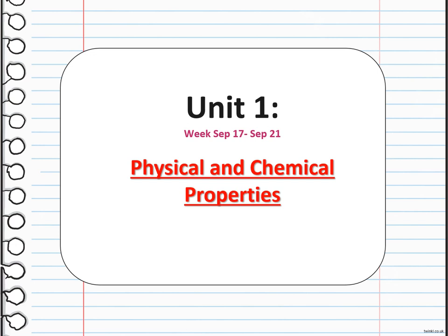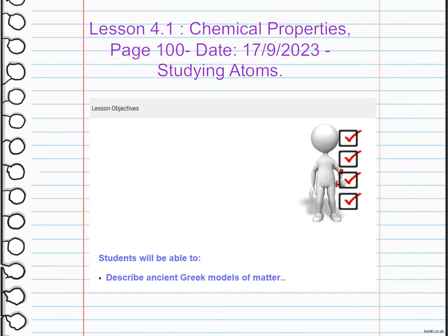Hello, my dear students, and welcome to week three overview. We're going to talk about the chemical properties, and we're going to start by describing the ancient Greek models of matter. The Greek model of matter was proposed by ancient Greek philosophers who suggested that matter is composed of tiny invisible particles called atoms.